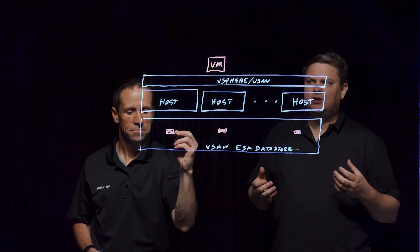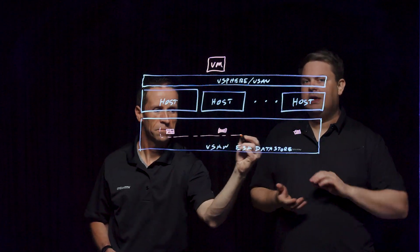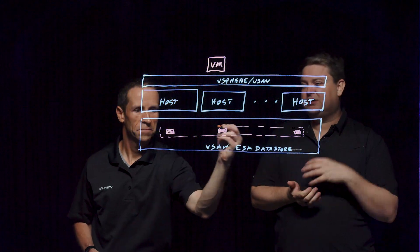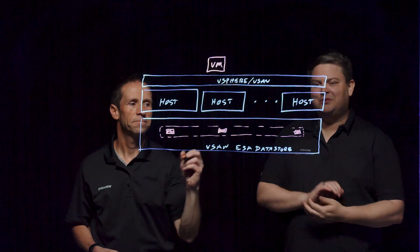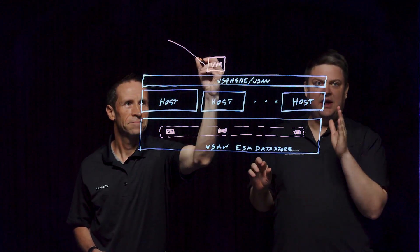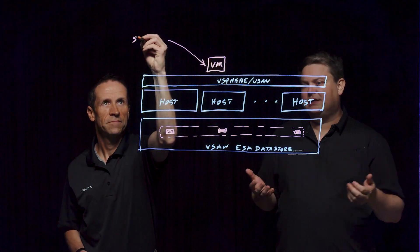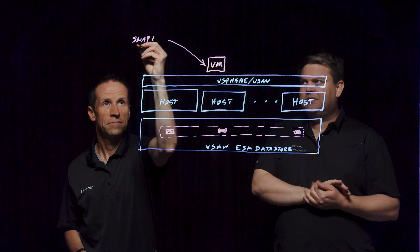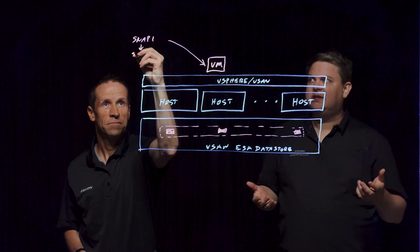If you've used traditional vSphere snapshots, you know that there are some limitations. As you take them, they could potentially stun a virtual machine. If you have a transactional database pushing a lot of I/O, this could be problematic — that sudden stun action could interrupt user activity. Also, the deeper that snapshot chain got, the performance could definitely degrade significantly.